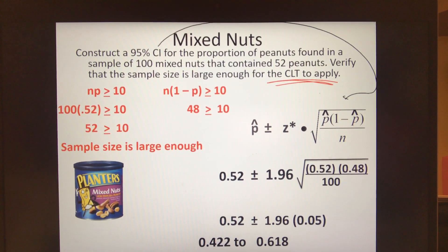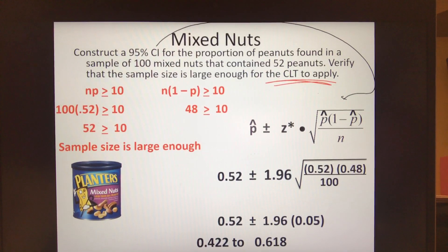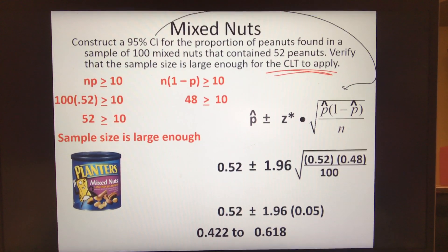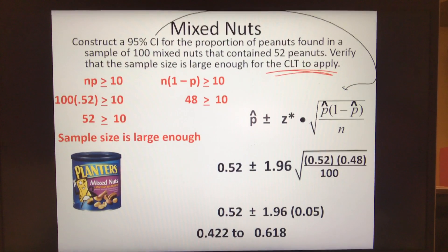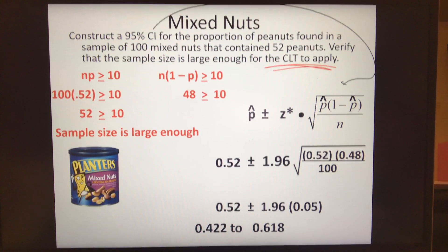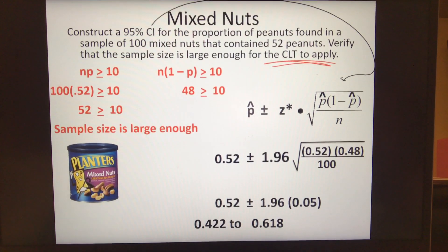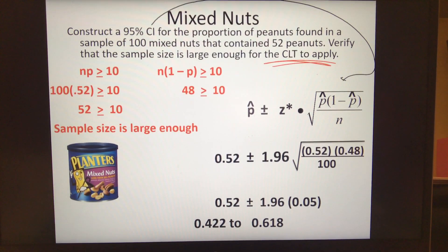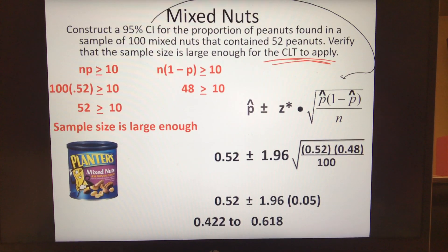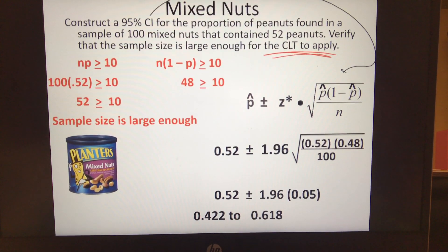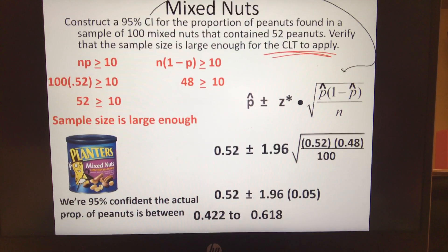And your confidence interval should be between 0.422 and 0.618. And we write that in words - I'm 95% confident that Planter's peanuts contain between 42% and 62% peanuts. That's what we're talking about, our percentage of peanuts that are in that mixed nuts. Hopefully that makes sense.